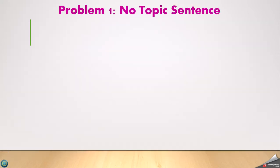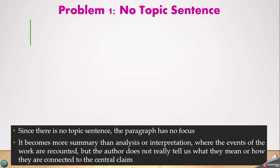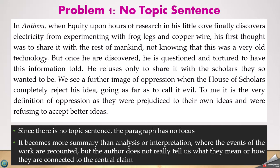Now let's look at a problem paragraph. In this one, notice there's no topic sentence, so the paragraph doesn't have a focus. Because of that, it goes into summary instead of analysis. The author is just telling us what happened in the work, not how it connects to their claim. This is about Anthem, a novella by Ayn Rand. In Anthem, when Equality, after hours of research in his little cove, finally discovers electricity — it's kind of plot point number one.